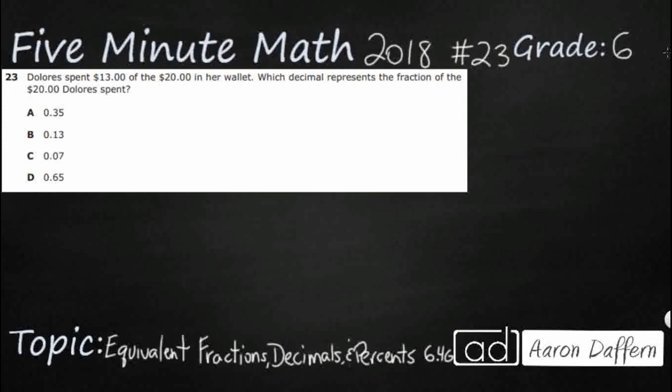So we have a money problem here. Dolores has $13 that she spent out of the $20 that is in her wallet, and we need to find the decimal that represents the fraction. So we need to make a fraction, and then we are going to turn that into a decimal.